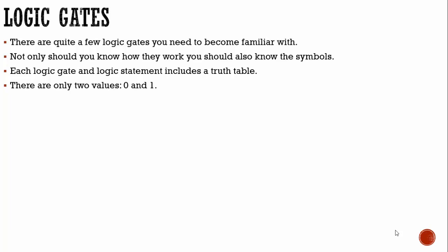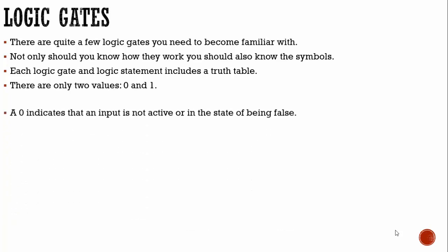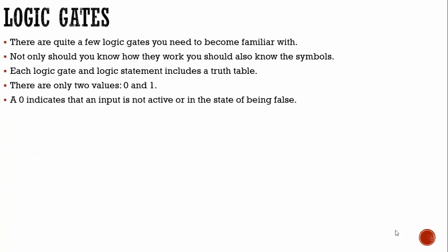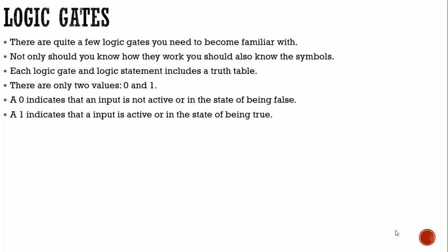There are only two values you need to be familiar with: zero and one. This is working off binary code. A zero indicates that an input is not active, or in the state of being false — you can think of it as being off. A one you can think of as being on; it indicates that an input is active, or in the state of being true.